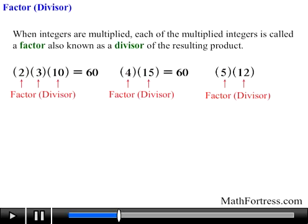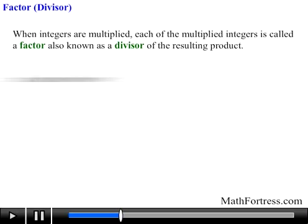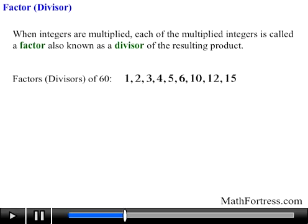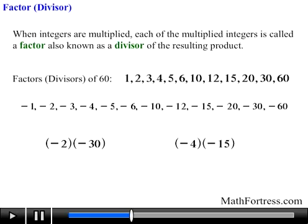As a result, the positive factors of 60 are 1, 2, 3, 4, 5, 6, 10, 12, 15, 20, 30, and 60. Keep in mind that the negatives of these integers are also factors of 60, since negative 2 times negative 30 and negative 4 times negative 15 also results in 60.